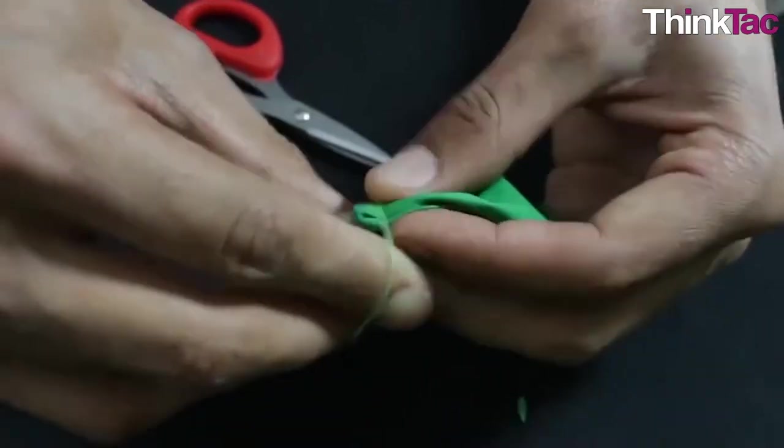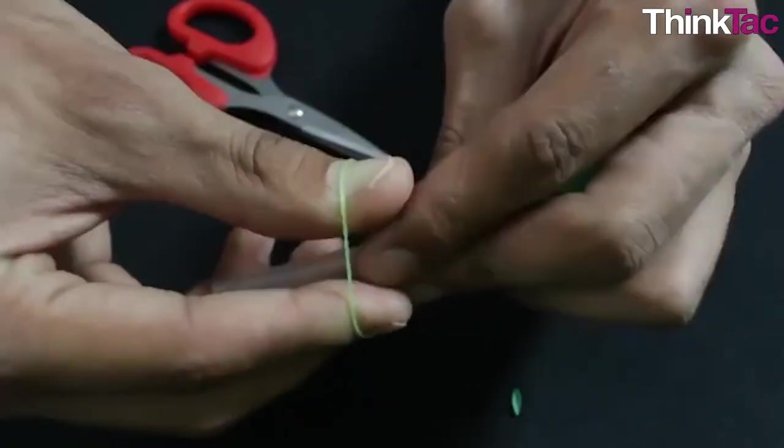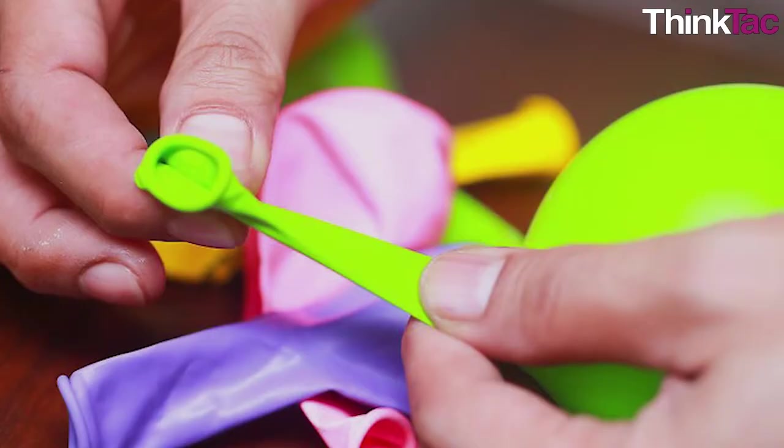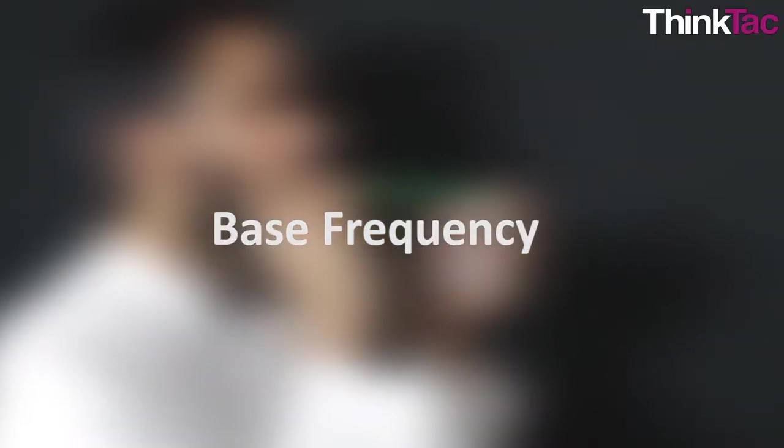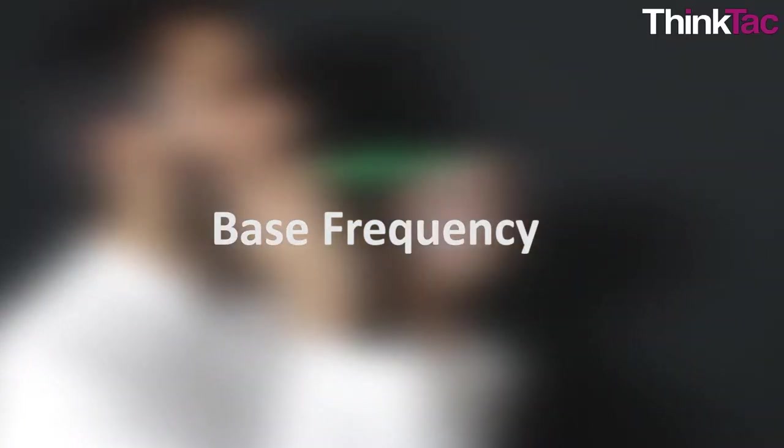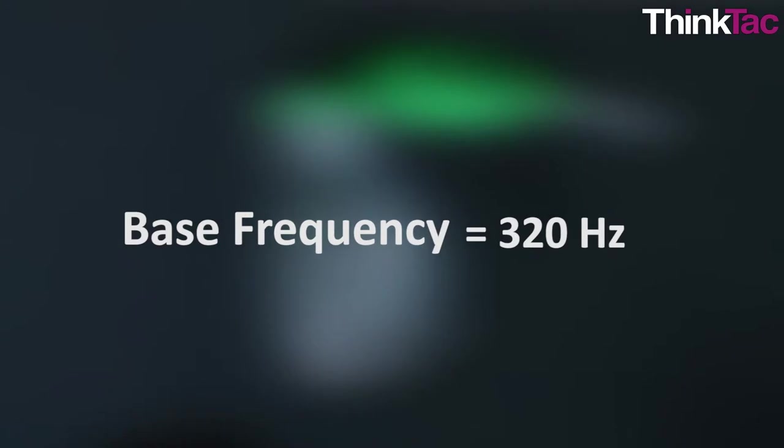One interesting variation we can try with this tactivity is to stretch the balloon by different amounts and observe how the frequency of sound changes with the stretching. Suppose the base frequency on blowing in the straw without stretching the balloon is 320 Hz.